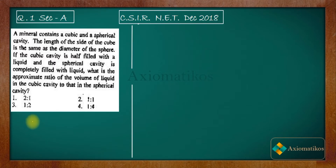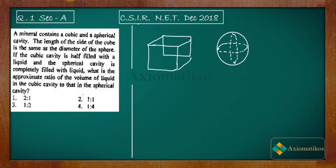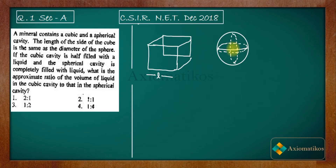I will draw a cube and a sphere — we don't need to draw the mineral, just the cube and sphere. The length of the cube is the same as the diameter of the sphere. Let us say l is the length of the cube, which means the diameter will also be l, and therefore the radius will be l/2.